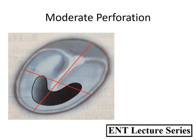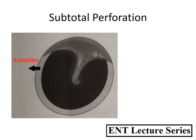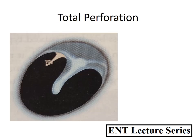This is a small perforation involving only the anterior inferior quadrant — one quadrant. This is a moderate perforation involving the anterior inferior and posterior inferior quadrants — two quadrants. This is a subtotal perforation where all quadrants are involved but the annulus is spared. And this is a total perforation where even the fibrocartilaginous annulus is not visible.